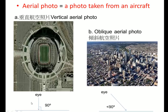And the second type is called oblique aerial photo. Again you take the photo from the sky but this time the angle is less than 90 degrees. You can still see the buildings and the streets.